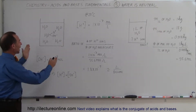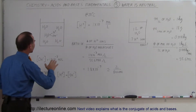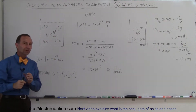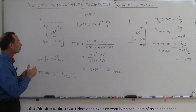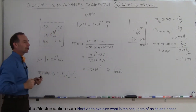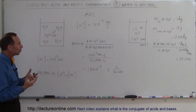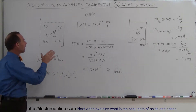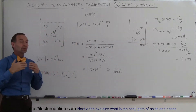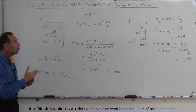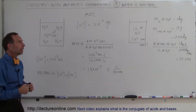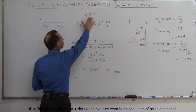Let's say we have a beaker of water with tons of water molecules in it. What happens is a very small percentage of those water molecules will actually dissociate into the hydrogen ion and the hydroxide ion. It turns out that the concentration of the hydrogen ion as a result of this dissociation is 1×10⁻⁷ moles per liter, and that is at 25 degrees centigrade.